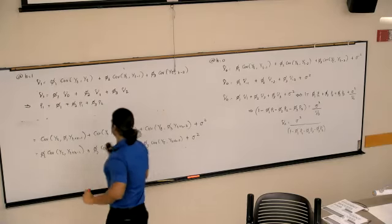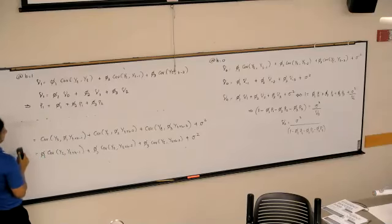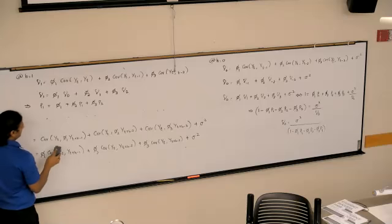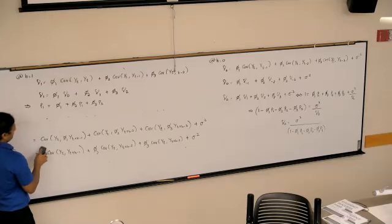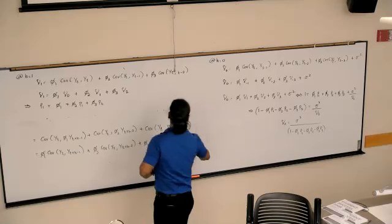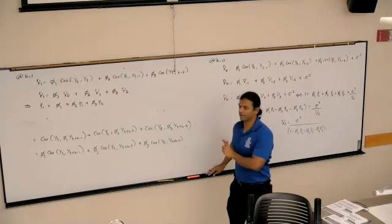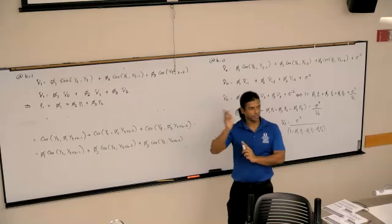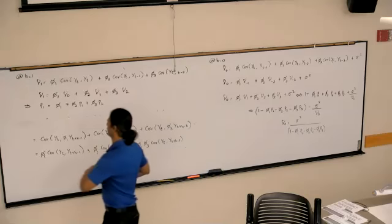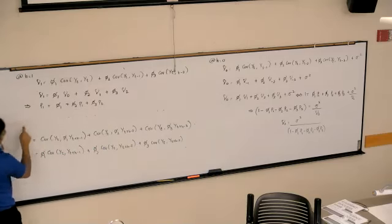So, we don't need that. All we need is this part. We don't need that sigma squared anymore because we're going forward. And epsilon T doesn't correlate with epsilon T plus H.